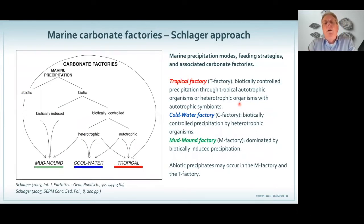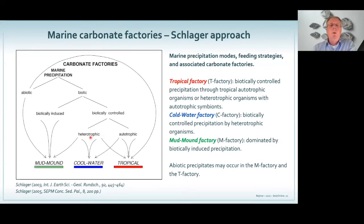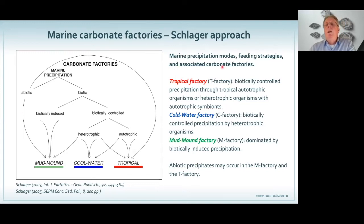The carbonate factory approach of Schlager tried to avoid over-complexity. He actually looked at marine precipitation and whether it was biotic or abiotic, whether biota played a role in carbonate being deposited, and whether they really steered how carbonate was formed. He looked at whether these carbonates need food to capture from the water column or whether they use diffusion. Then he came up with the microbial mud mound factory, the cool water factory, and the tropical factory — really looking at precipitation modes, feeding strategies, and associated carbonate factories.